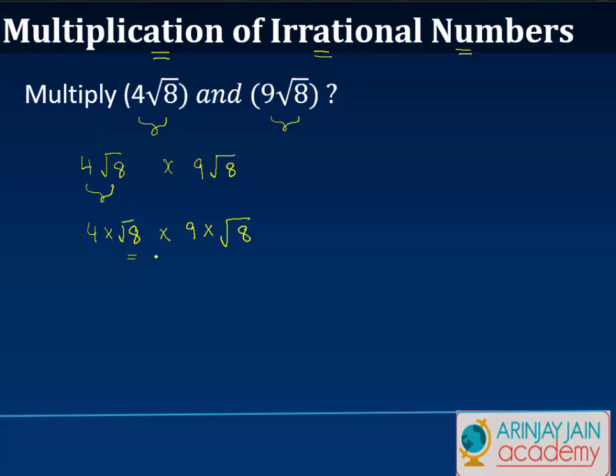Now, incidentally, in this case, the roots are common. So we can just reorganize that as 4 times 9 times root 8 times root 8. Or in other words, this can be written as 4 times 9 times 8 because root 8 into root 8 is equal to 8.